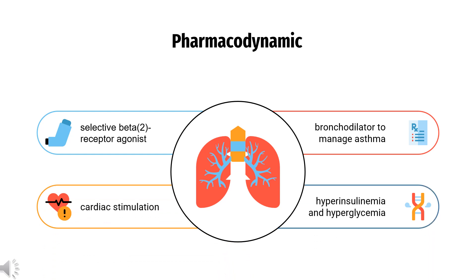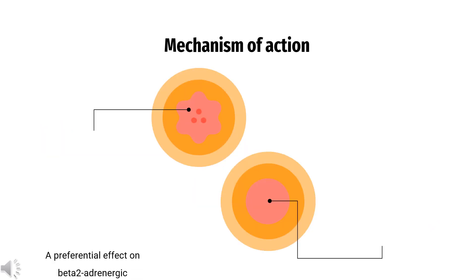Pharmacodynamics: Levosalbutamol acts by relaxing smooth muscle in the bronchial tubes to increase air flow and relieve acute shortness of breath.